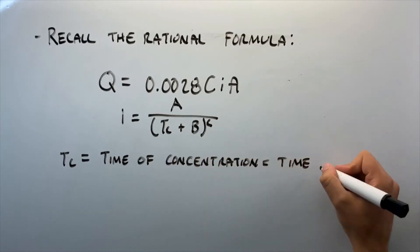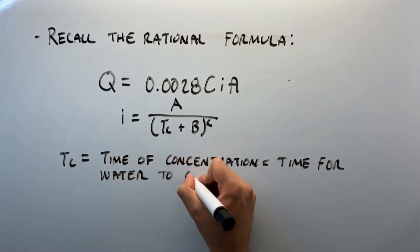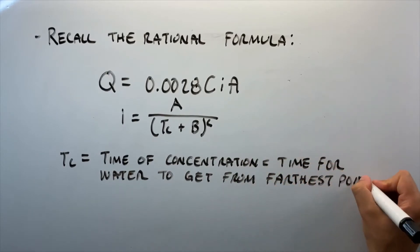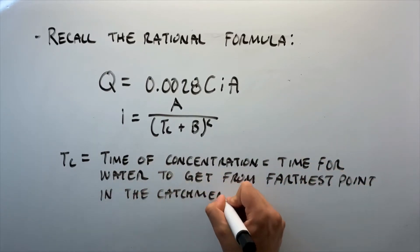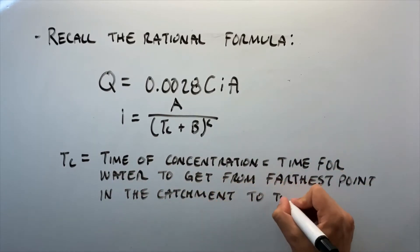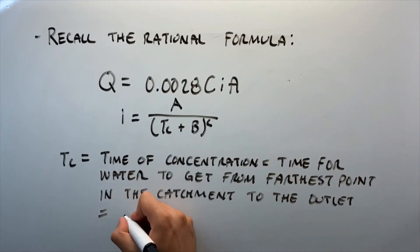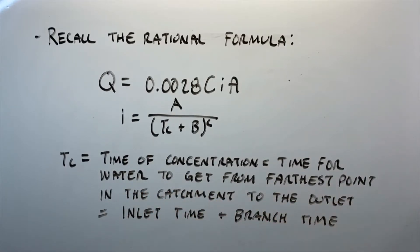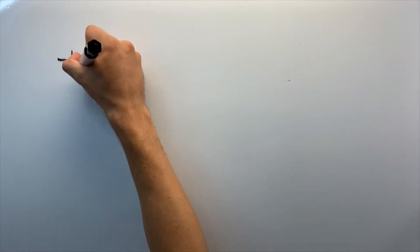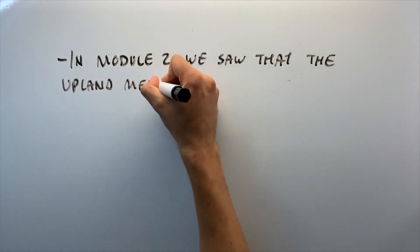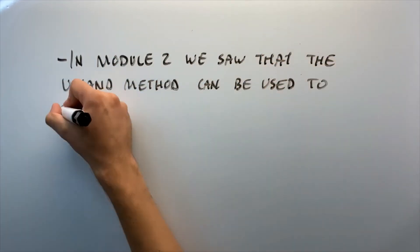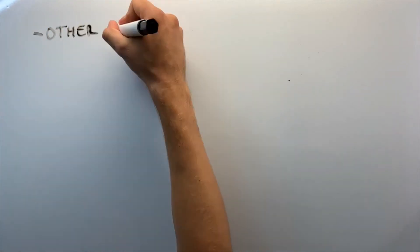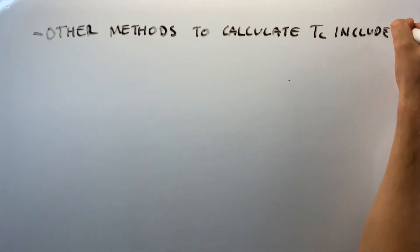Here, Tc is our time of concentration — this is the time for water to get from the farthest point in the catchment to the outlet, equal to our inlet time plus the branch time. In Module 2 we saw that the Upland method can be used to calculate Tc, but there are other methods we can also include.